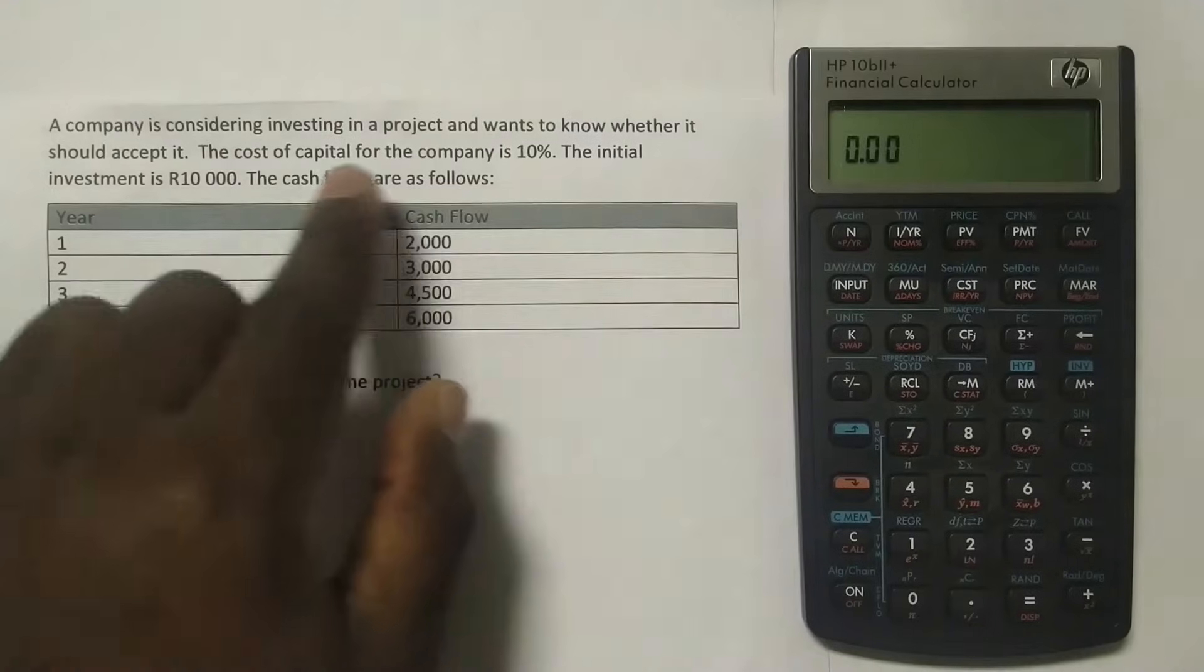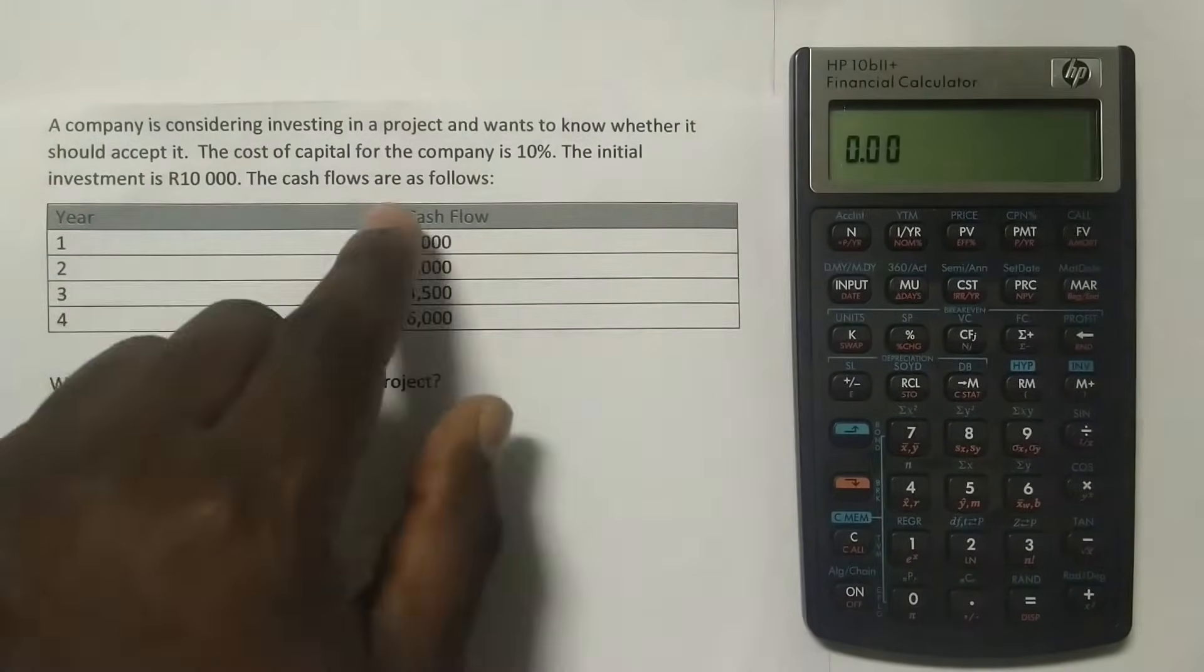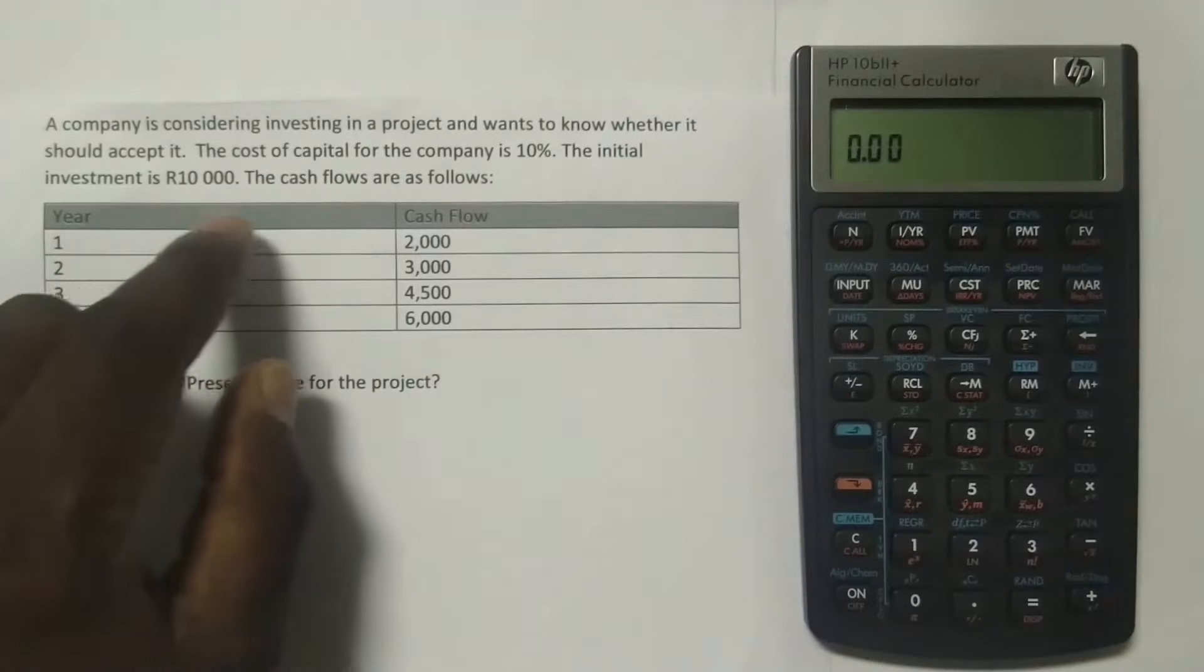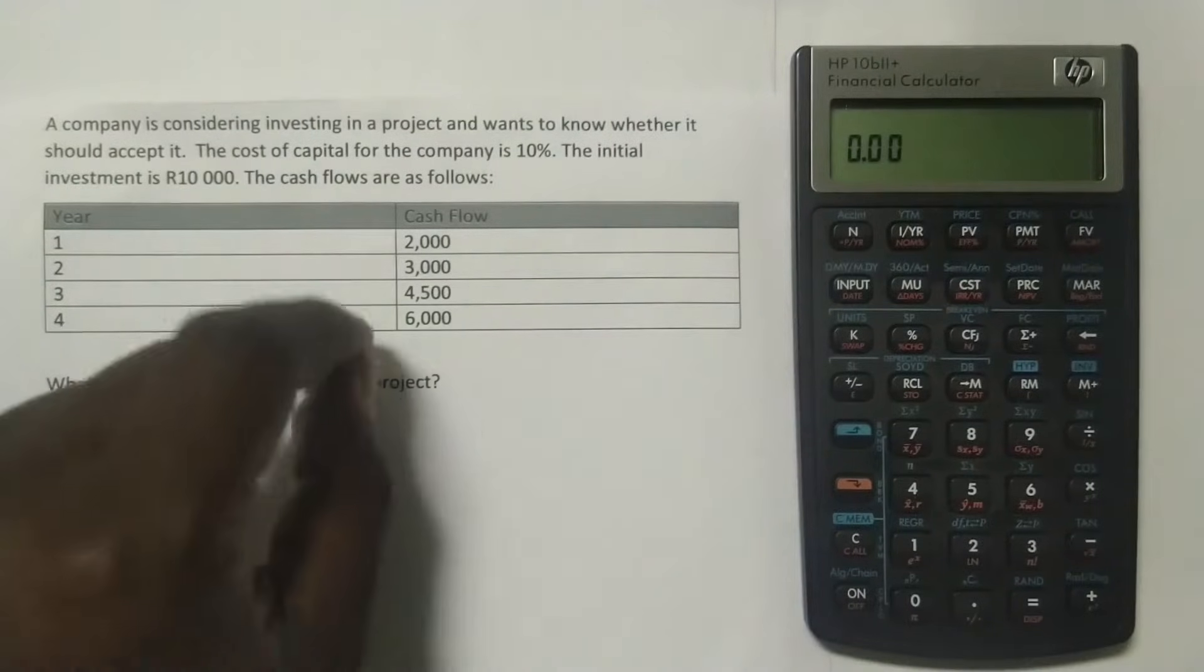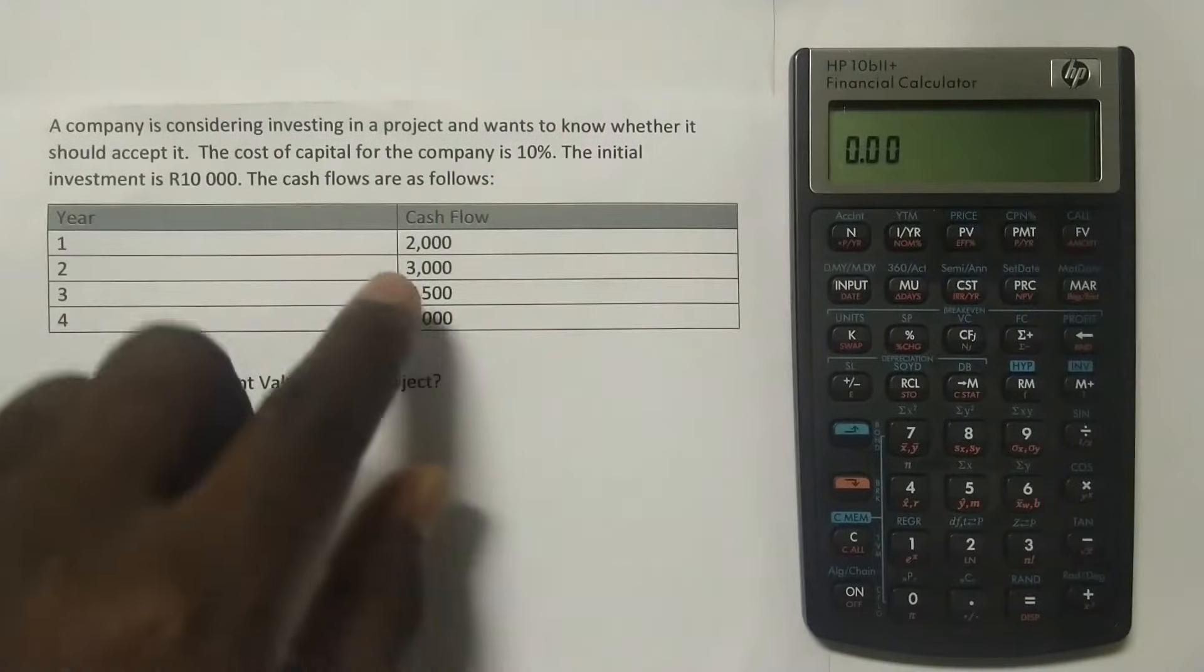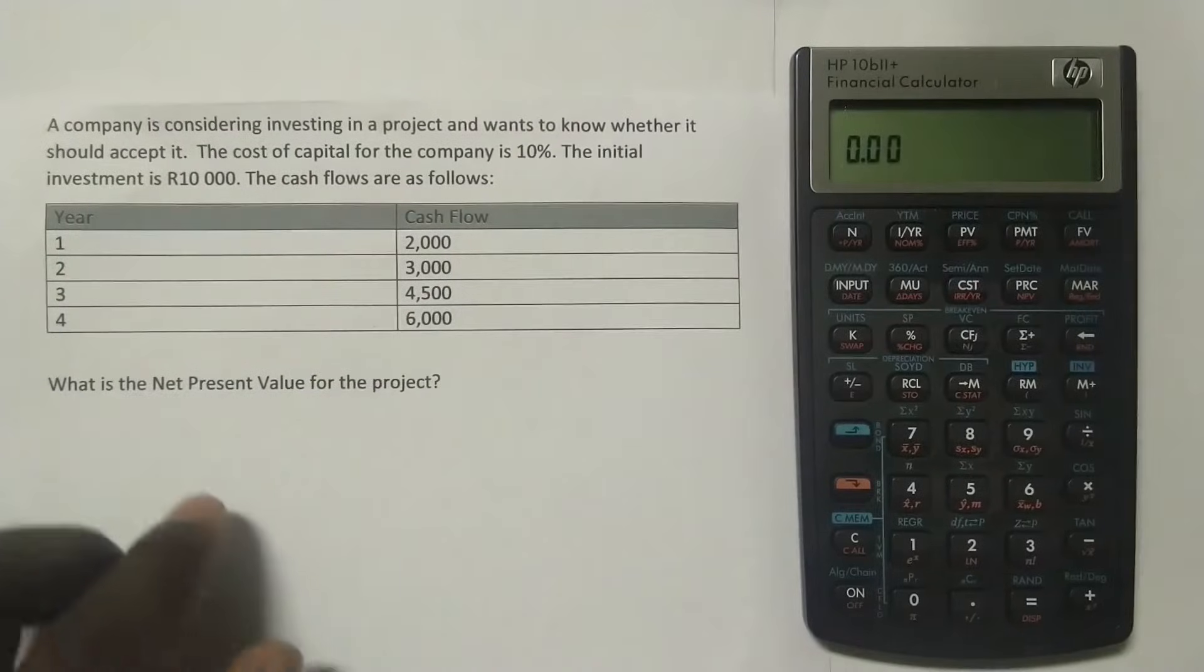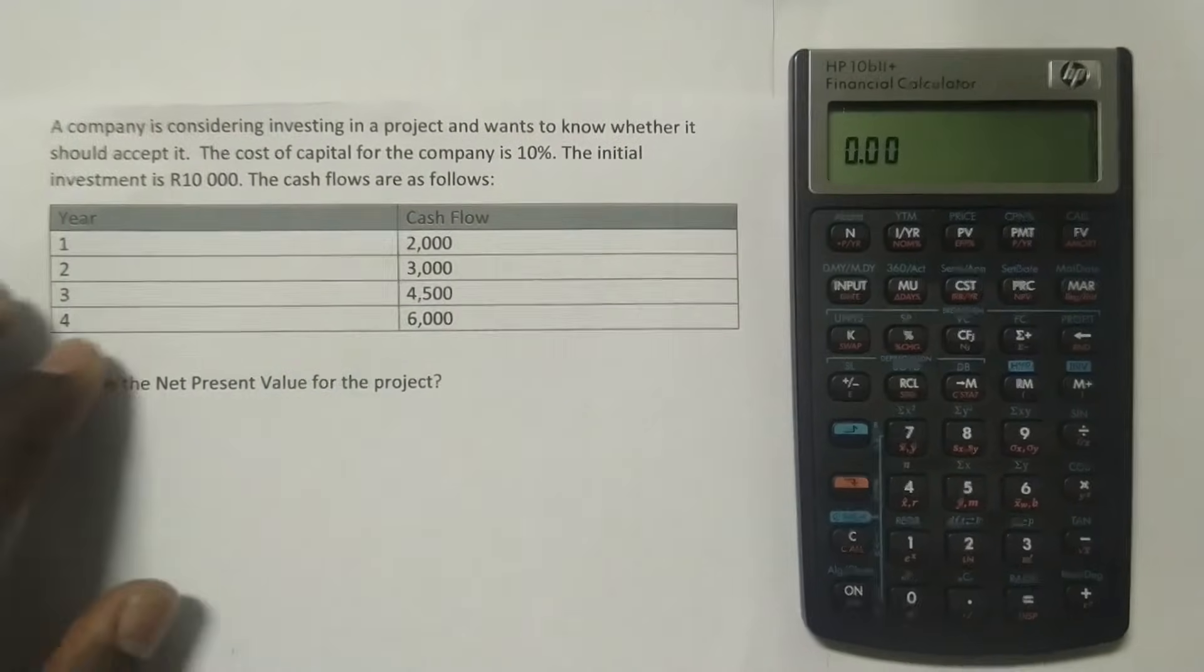A company is considering investing in a project and wants to know whether it should accept it. The cost of capital for the company is 10%. The initial investment is 10,000 rand. The cash flows are as follows, and we have positive cash flows from year 1 to year 4, and we have 2,000 all the way to 6,000 rand at year 4. What is the net present value for the project?